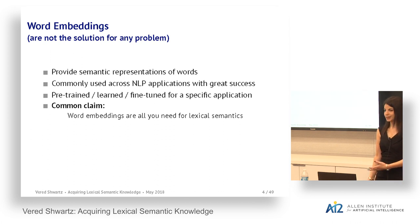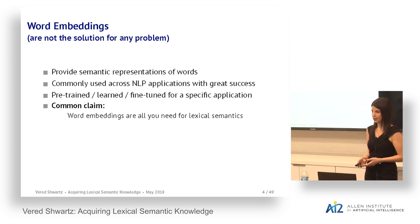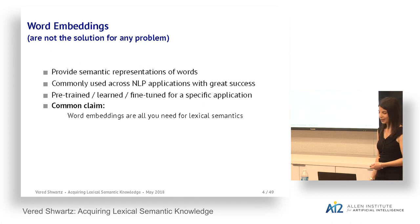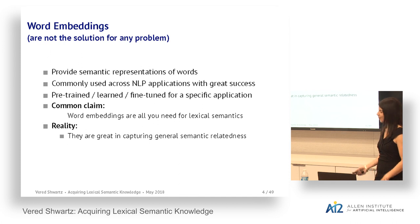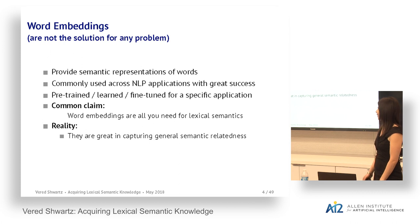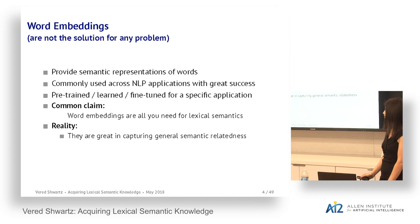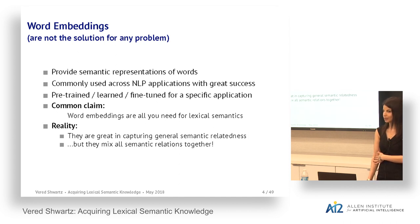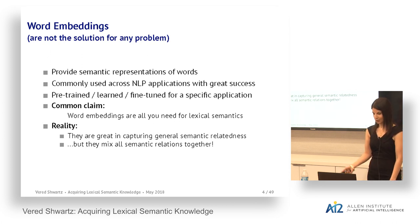Many people who don't work on lexical semantics would think word embeddings are sufficient for any kind of lexical semantics you need in your model. I would like to argue that this is not exactly correct. Word embeddings are great at capturing general semantic relatedness, but they have a major problem: they tend to mix all different semantic relations together. I'll show an illustration of that.